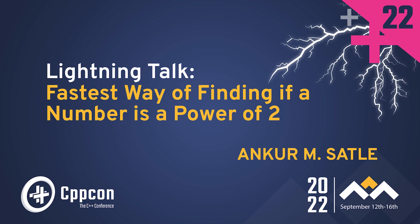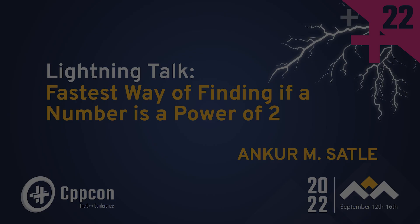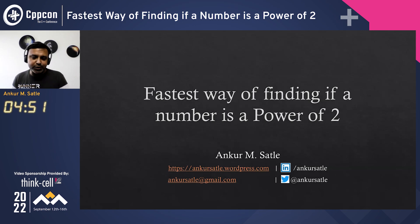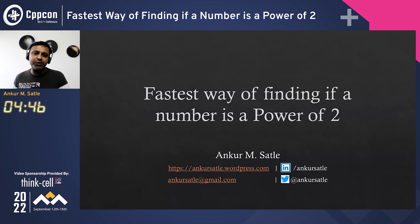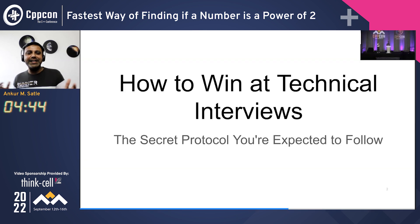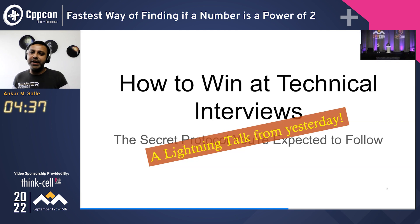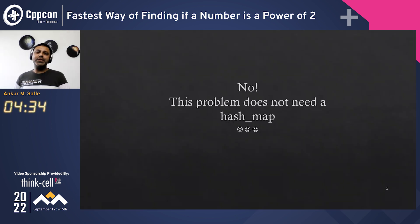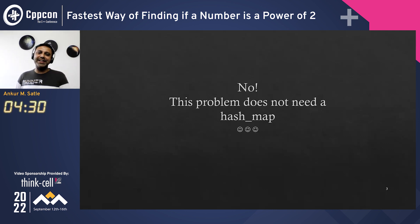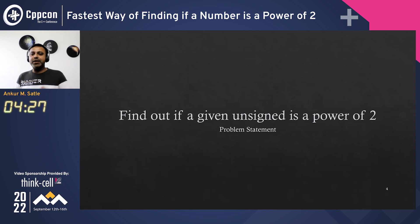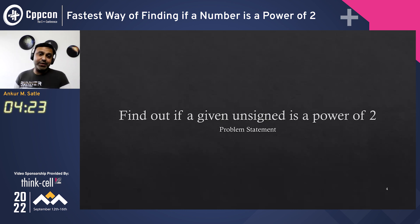This is an interview question which you may get asked, at least if you are relatively not too experienced. So what is the fastest way of finding if something is a power of two? It's pretty much on the same lines as an interview question, on the same lines as a lightning talk. This one does not involve using a hash map. So let's look at how to find out if an unsigned is a power of two — that's the problem statement.